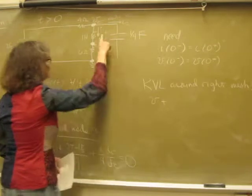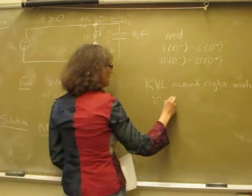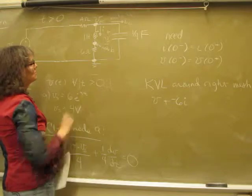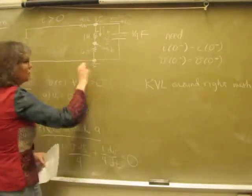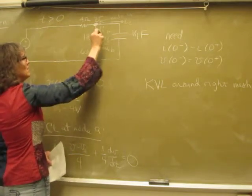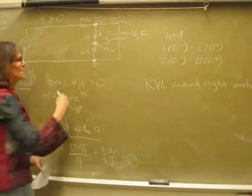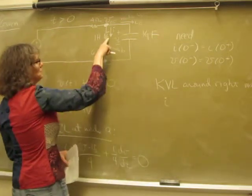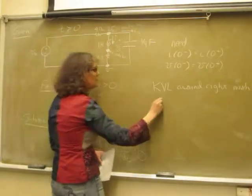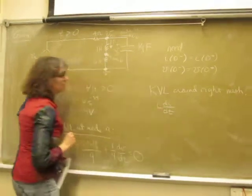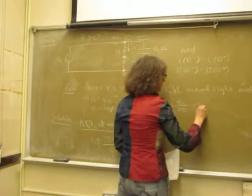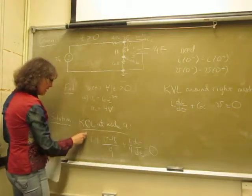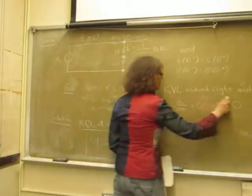I made it hard on myself — let me go the other way. I'm doing Kirchhoff's voltage law, but instead of going clockwise I want to go counterclockwise so that I'm in the same direction as I, and it'll be easier mathematically. What's the voltage across that inductor? It's L·di/dt. So: L·di/dt plus 6I minus V equals zero. There's my second equation.